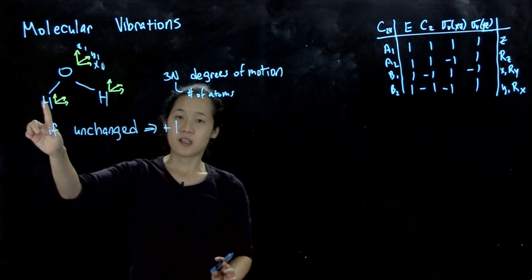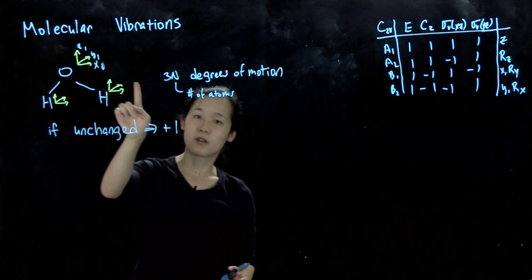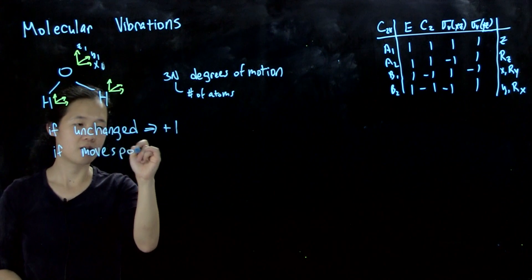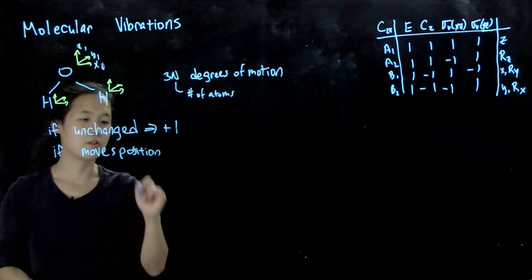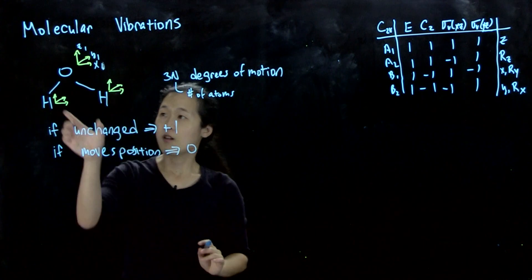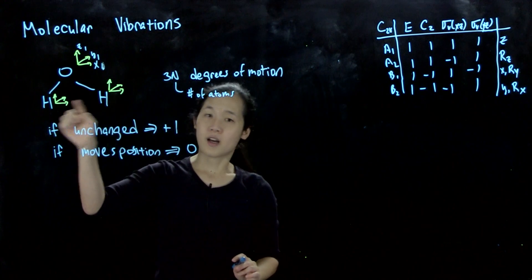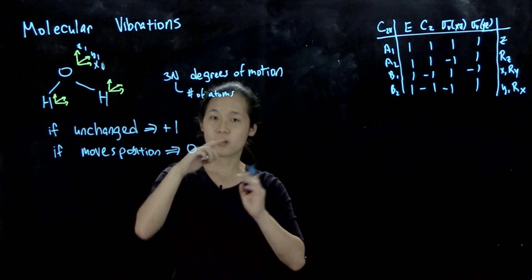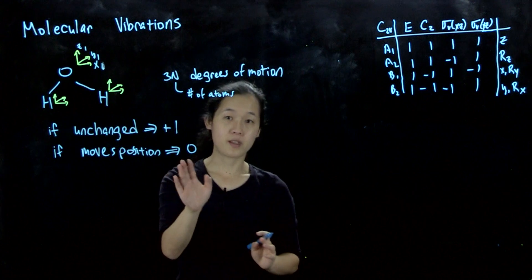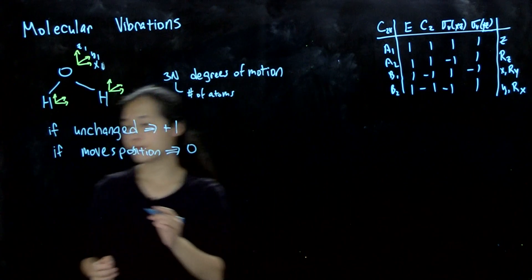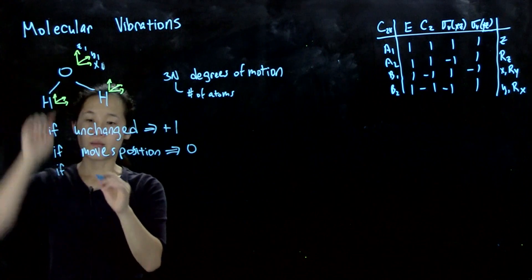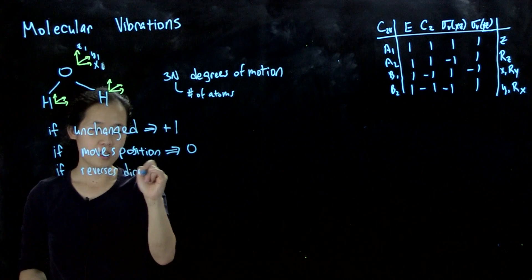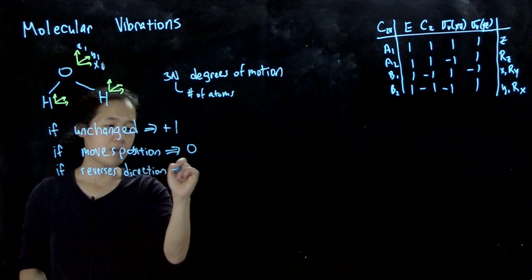The z-axis on the oxygen is unchanged throughout, but the z-axis for the hydrogen atom — when you do a C₂ — flips over. So if the atom moves position, it's going to be a 0. The coordinate systems corresponding to the hydrogen atoms, when you rotate or move position, they're no longer block-diagonal, so you have off-diagonal blocks. That's why it's a 0 for the trace of the character. And if it doesn't change position but reverses direction, it's going to be a −1.